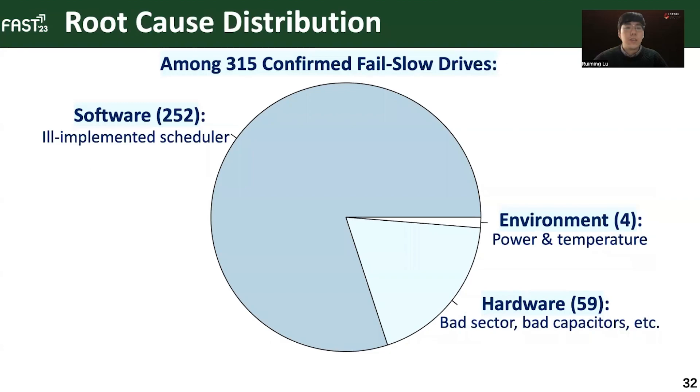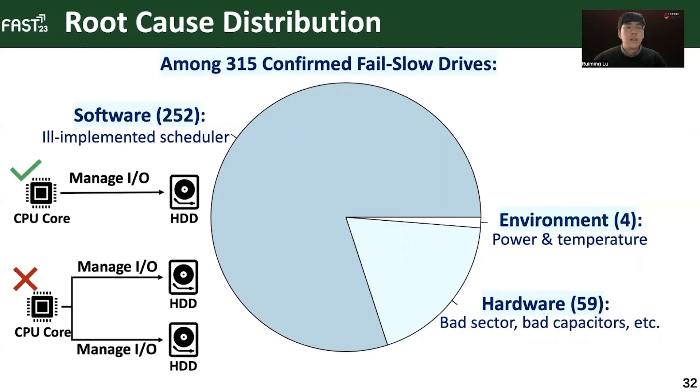Moreover, we further analyze the root causes of the 315 fail-slow drives in the test benchmark. The majority of the root causes are software-induced resource contentions. For example, in one cluster, the host will assign an individual thread to manage the I/O of each disk. However, the ill-implemented scheduler may incorrectly assign one thread to host multiple HDDs. As a result, these HDDs suffer from fail-slow failures from resource contentions.